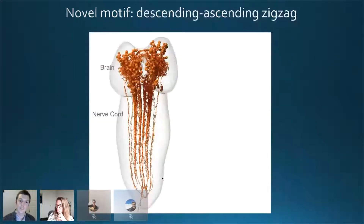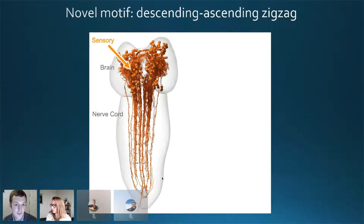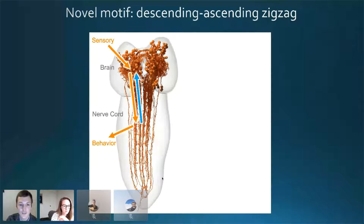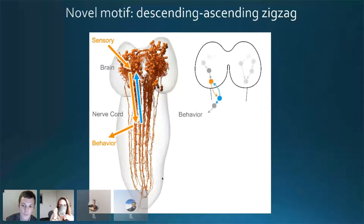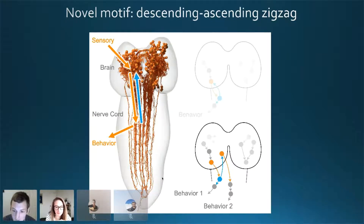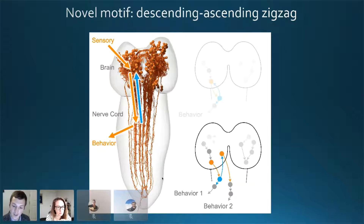The last motif involves descending neurons. Sensory signal comes into the brain, a behavioral decision is made, descending neurons send this signal to the nerve cord where behavior is enacted. We found that when this signal reaches the nerve cord, it is immediately bounced back via ascending neurons back to the brain — and not just anywhere, but specifically to descending neurons themselves. Crucially, we never found a descending neuron and an ascending neuron forming a reciprocal loop. Instead, they formed zigzag motifs: one descending neuron sends a behavioral signal, that signal is bounced back to a completely different descending neuron enacting a different behavior. We think the zigzag motif could be encoding behavioral sequences.